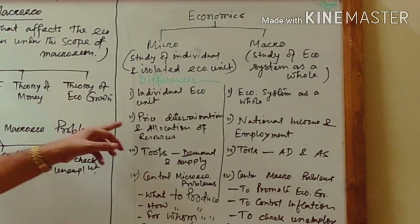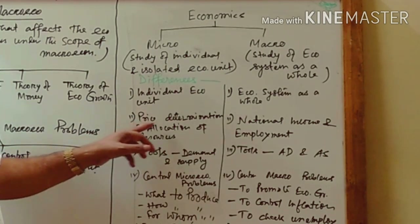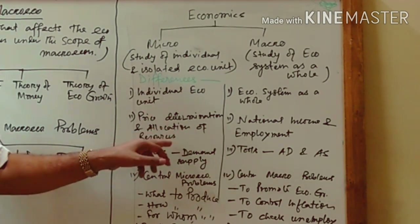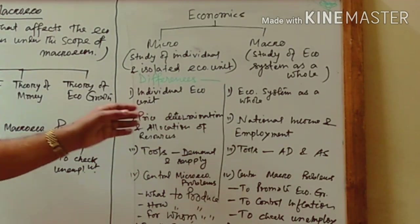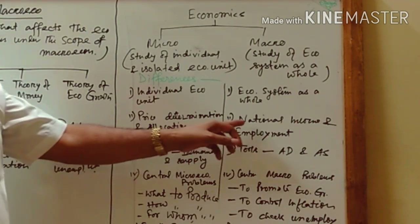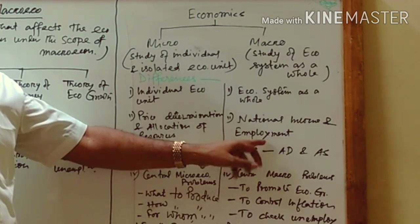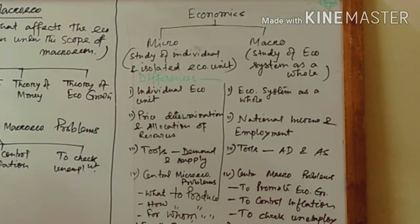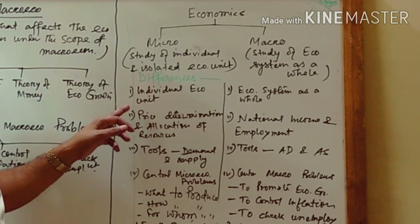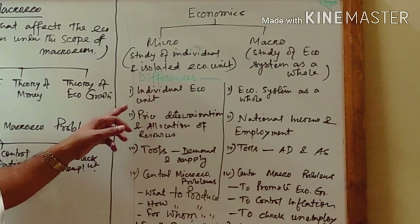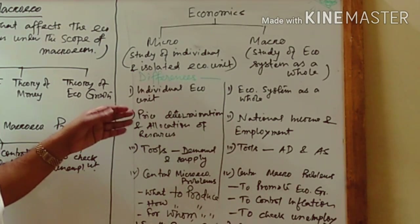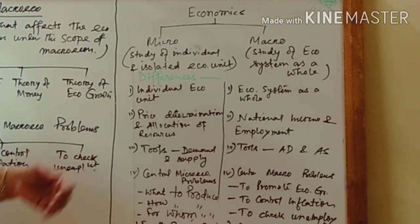Point number two: price determination and allocation of resources is the primary function of microeconomics. What is national income and determination of employment is the primary function of macroeconomics. In microeconomics, price determination mainly focuses on factor prices — the price of land, labor, capital, entrepreneur — and product prices, the price of final goods and services being produced in our country.